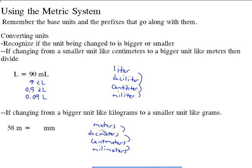So I start off with 58 meters. So each time I go down, I'm multiplying by 10. So by 10, if I have 58 meters, then I'm going to have 580 decimeters. I'm going to have 5,800 centimeters. And that means I'm going to have 58,000 millimeters.